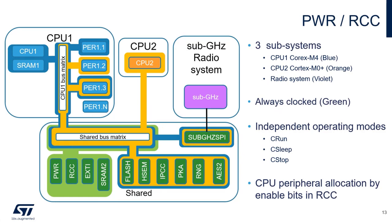We have three independent subsystems. When at least one core is active, you can see the always-clocked peripherals in green: sub-GHz radio power, RCC, EXTI, and SRAM memory. You can also see the security peripherals. All communication between the cores is possible thanks to the shared bus matrix. Both CPUs can enter a particular low-power mode — CRUN, C-Sleep, C-Stop — in an independent way. It is possible to allocate a particular peripheral to a particular CPU using dedicated bits in RCC registers, and it is also possible to allocate a peripheral to both CPUs.